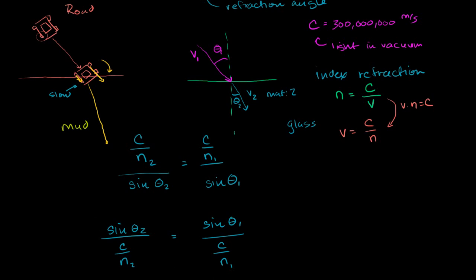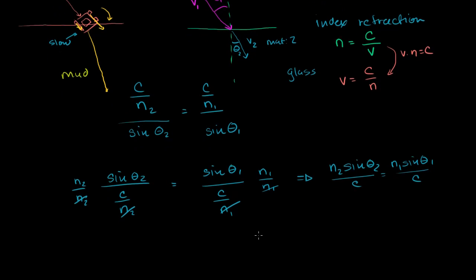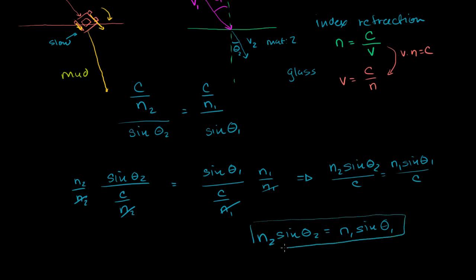Now multiplying the numerator and denominator of the left side by N2, those terms cancel out, and doing the same on the right side with N1, we get N2 times sine of theta 2 over C, equals N1 times sine of theta 1 over C. Multiplying both sides by C gives us the form of Snell's Law that some books show: N2 times sine of theta 2 equals N1 times sine of theta 1 — the refraction index for the second medium times the sine of the refraction angle equals the refraction index for the first medium times the sine of the incident angle.